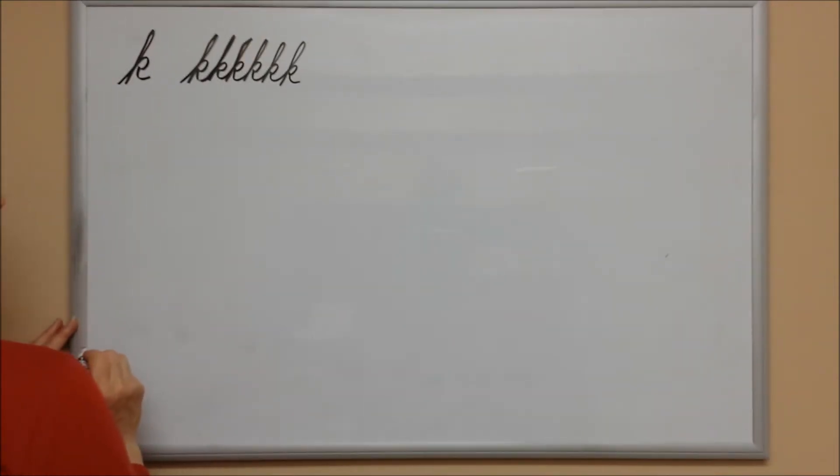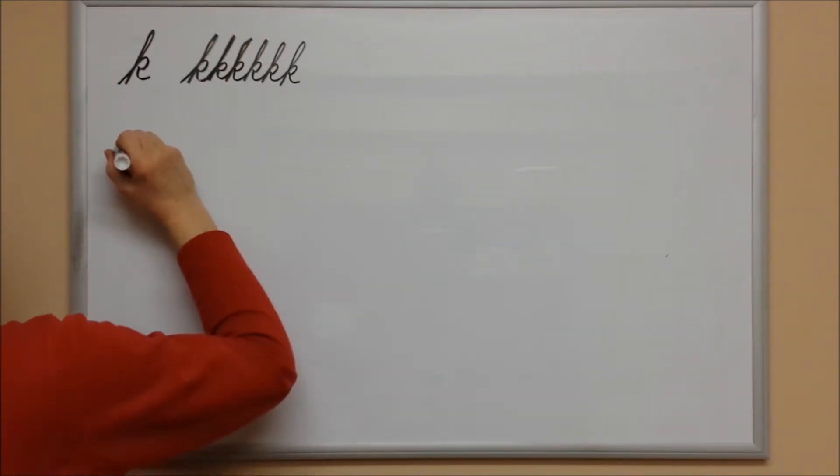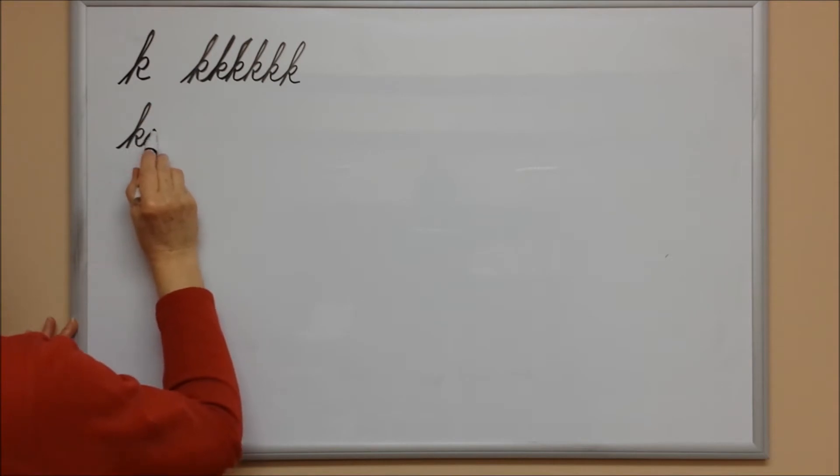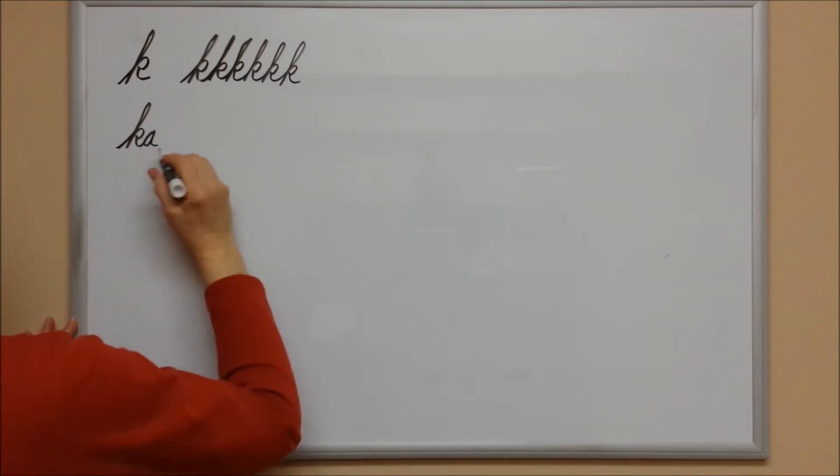Now here's K connected to other letters. K, A. As with my other letters, I had to go to the top of the A to begin the A, then go around, back down and around. That's K A.